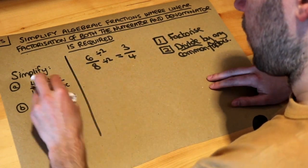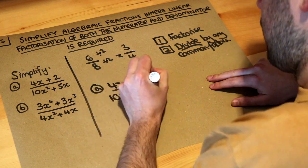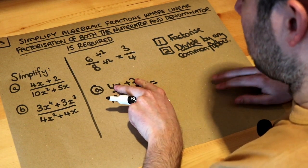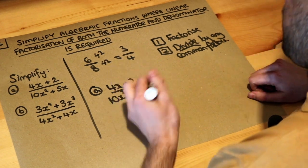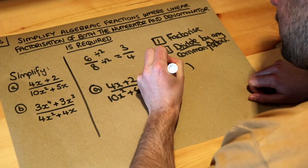So what about this first one? Now the title suggests that we need to factorize both of them. So factorize the top first, the numerator. What's common to 4x and 2? Well they both have a factor of 2, and then 2 times what is 4x? It's 2x. 2 times what is 2? Well it's 1.